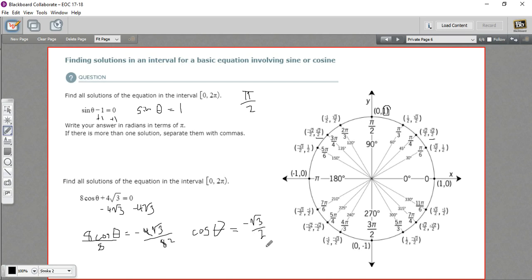X values are negative √3 over 2. And let's see, here's one and here's one. So the answers here are 5π over 6 and 7π over 6.